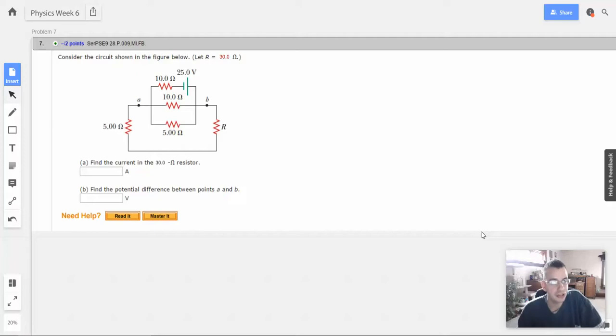Week six, problem seven. Consider the circuit shown below. Let R equal 30 ohms. All right, so find the current in the 30 ohm resistor.